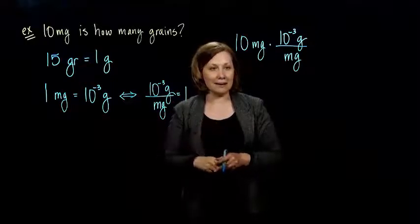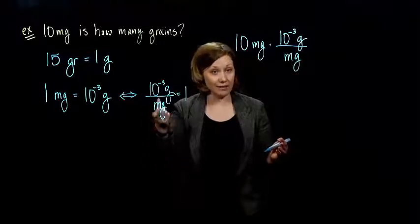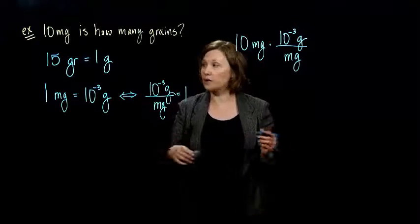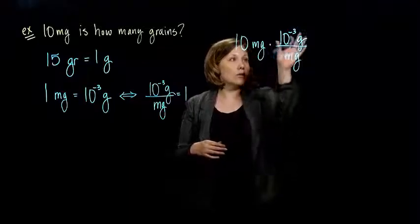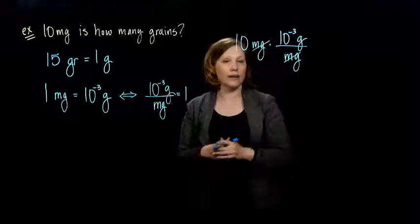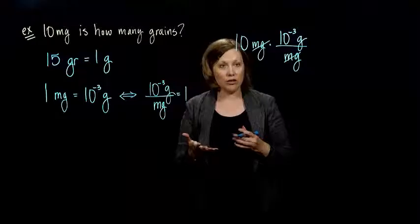Something on the top, the same thing as something on the bottom. When you divide it, right? When you divide something, a number by itself, it's always equal to 1. Always true in math. So, we're multiplying by that and when I do that, that's going to get rid of my milligrams and leave me with just grams.